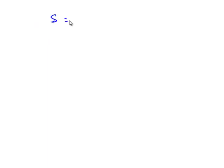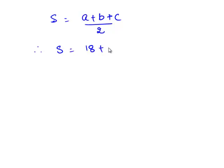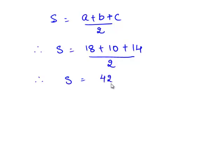Now we need to find S, which is the semi-perimeter, equal to (A plus B plus C) divided by 2. Therefore, S is equal to 42 divided by 2, which is equal to 21 cm.